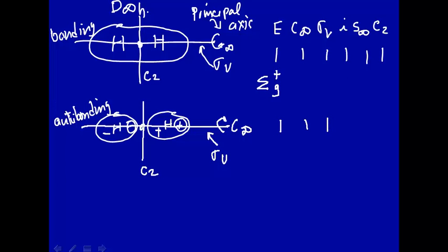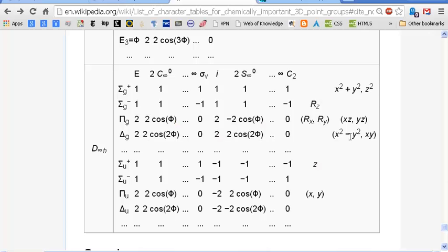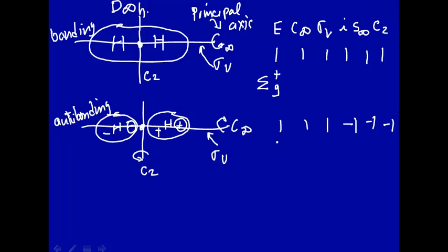Inversion — the pluses go all over to the minuses, and the minuses when you invert through that center go all over to the pluses. So the character there is minus one. S∞ — you rotate around the axis and then reflect through a plane perpendicular to it. The rotation kept plus to plus and minus to minus, but the reflection causes the plus to change sign with the minuses — so that's minus one. Finally, C2 rotation 180 degrees — the plus goes into the minus and the minus into the plus — that's minus one. So we have three ones and three minus ones. That corresponds to sigma u plus. So the bonding orbital is sigma g plus and the anti-bonding is sigma u plus.